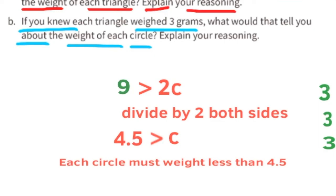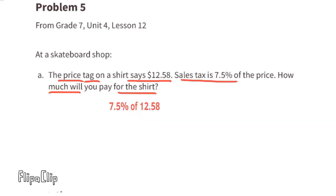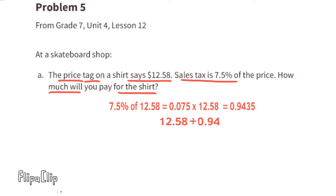Problem number five, from 7th grade Unit 4 Lesson 12, at a skateboard shop. Part a: The price tag on a shirt says $12.58. Sales tax is 7.5% of the price. How much will you pay for the shirt? 7.5% can be written as 0.075, and 0.075 times $12.58 equals $0.9435, approximately 94 cents. Adding the tax: $12.58 plus $0.94 equals $13.52. The total cost of the shirt would be $13.52.